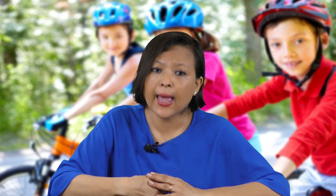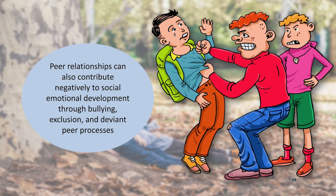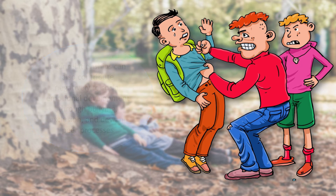During adolescence, you start having a group of friends you identify with because they share the same behaviour, attitude to life, and tastes. Peer relationships provide a unique context in which children learn critical social-emotional skills such as empathy, cooperation, and problem-solving strategies. However, peer relationships can also contribute negatively to social-emotional development through bullying, exclusion, and deviant peer processes. It is therefore very important to select your peer group, as a good peer group helps you become a better member of society, while a bad peer group can lead to deviant behaviour.